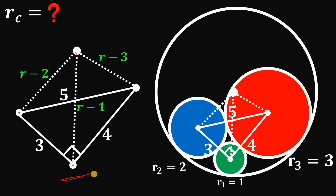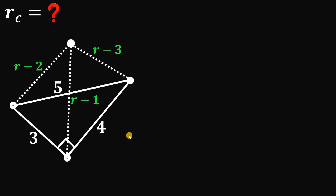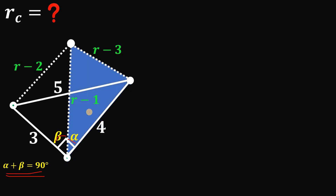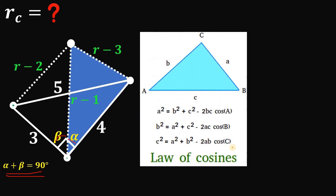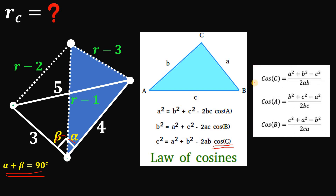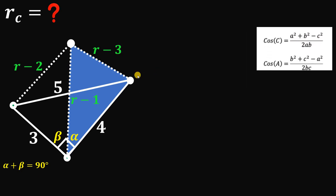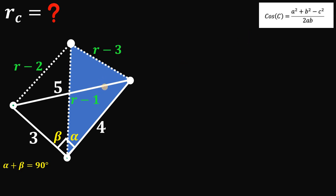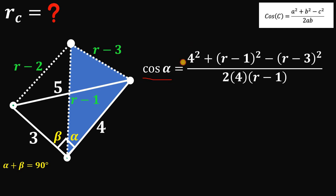We will use this figure to answer this question. Let's call one angle at point B equal to alpha and the other angle equal to beta. Note that alpha plus beta is 90 degrees — we will use this concept later. For now, we will use this triangle and find the value of R using the law of cosines. We'll use the format: cosine C equals A squared plus B squared minus C squared, all over 2AB.